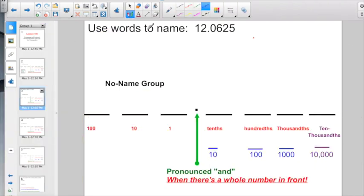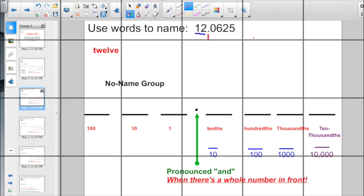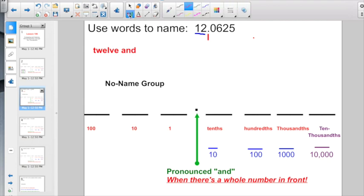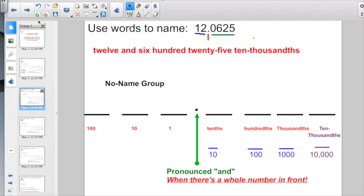Here they're asking us to use words to name. So first of all, I'm going to name my whole number. I have a 1 and a 2 in the no-name section, so what am I going to call that? Just 12. Now we have to go and name the decimal point, and I'm going to say what? 12 and. And lastly, let's take a look at our decimal number. We have 0, 6, 2, 5, so name the number. That would be 625, and he's four places past the decimal point, so 625 ten-thousandths. And it's about that easy. Let's try another one.